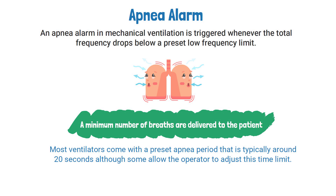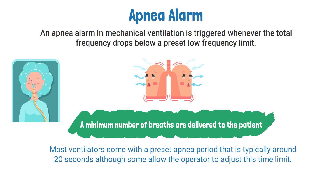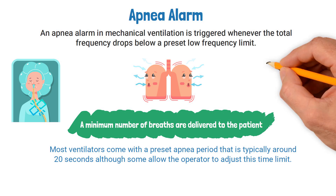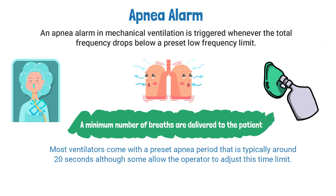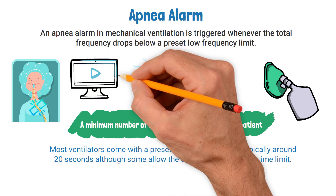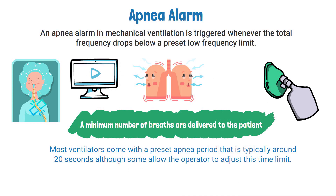The activation of an apnea alarm most commonly occurs whenever there is a disconnection in the circuit from the ET tube. When this occurs, the respiratory therapist must ensure that the patient is being ventilated by delivering manual breaths until the source of the disconnection is identified.